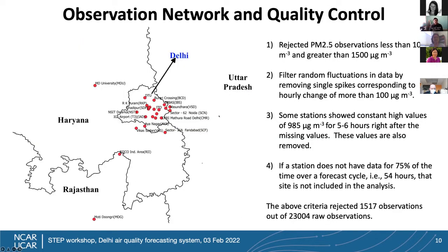After making the forecast, we need observations for evaluation. Our observation network in Delhi has grown from 24 to 47 stations, shown as red dots on the map. We apply several quality control criteria to the raw data: by applying four quality control criteria, we rejected more than 1,500 observations out of more than 23,000, then used the remaining observations for evaluation.